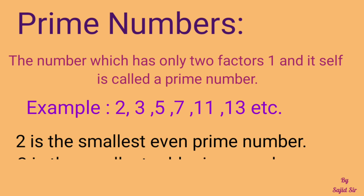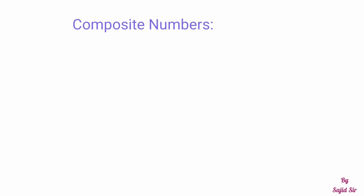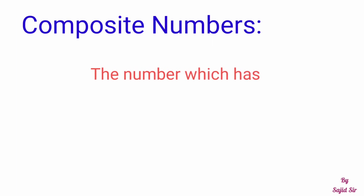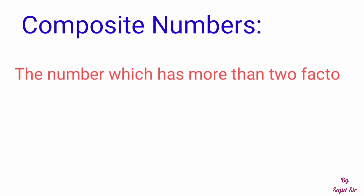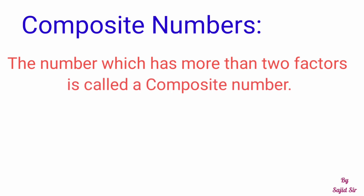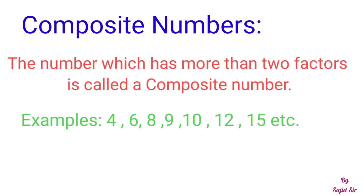2 smallest even prime number है और 3 smallest odd prime number है। Composite Numbers: The number which has more than two factors is called a composite number. ऐसा number जिसके दो से ज्यादा factors होते हैं उसे हम composite number कहते हैं। For example, 4, 6, 8, 9, 10, 12, etc. are the composite numbers.